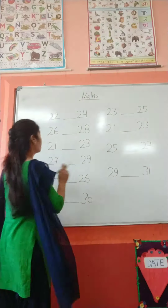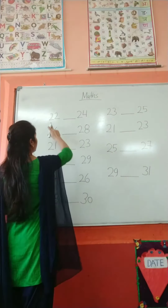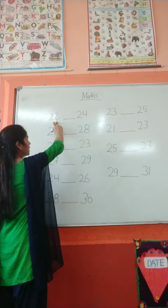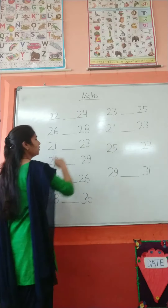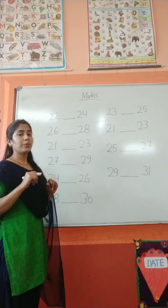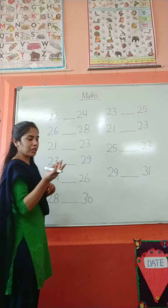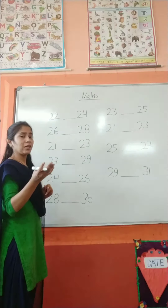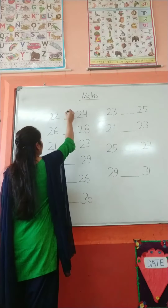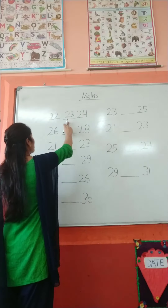Between means which number? So here is number 22 and 24. Between 22 and 24, which number comes between? 22, 23, and 24. So here the answer is 23. Now this is complete.